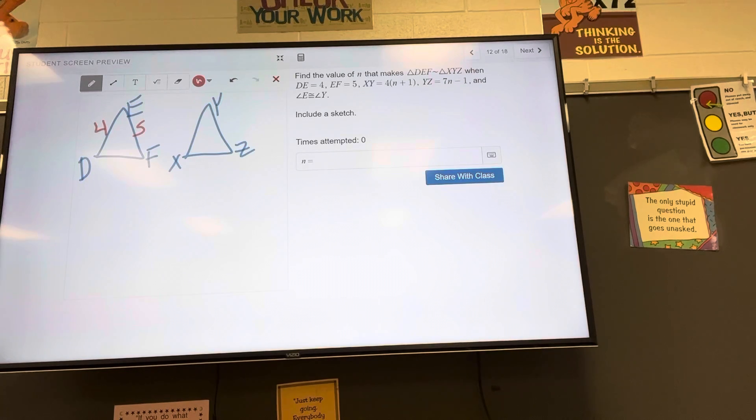XY is 4 times the quantity n plus 1, so don't forget the parentheses. Oh wait, I'm at that in the wrong place. Where's my mouse? XY is 4 times the quantity, XYZ is 7n minus 1, and angle E...